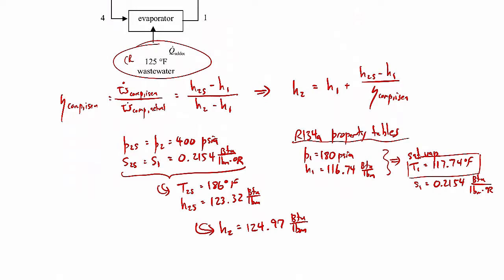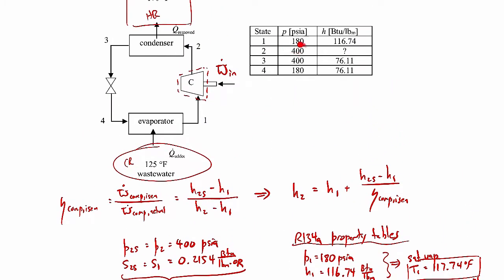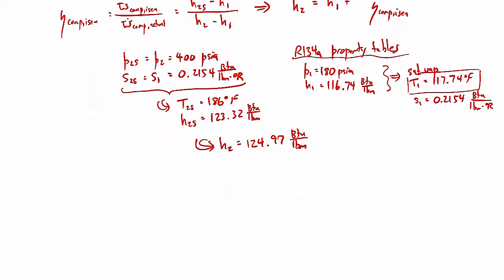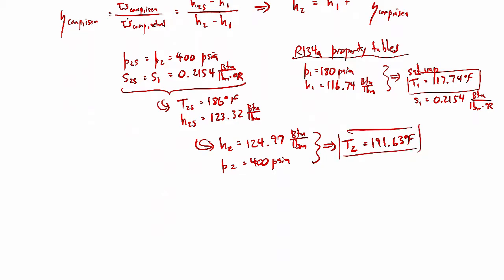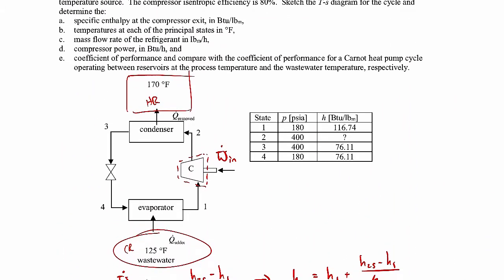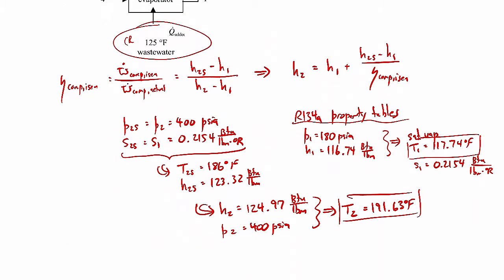Now that we know H2 and the pressure at state 2 (P2 = 400 PSIA), going to the property tables gives T2 as 191.63 degrees Fahrenheit. That completes part A — finding the specific enthalpy at the compressor exit, state 2, which is 124.97 BTUs per pound mass.